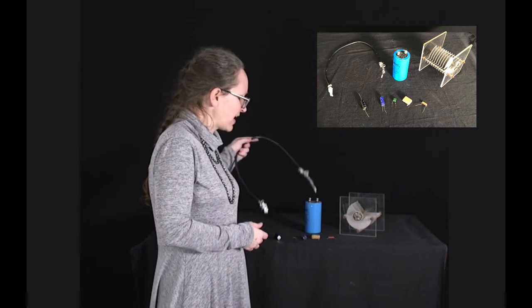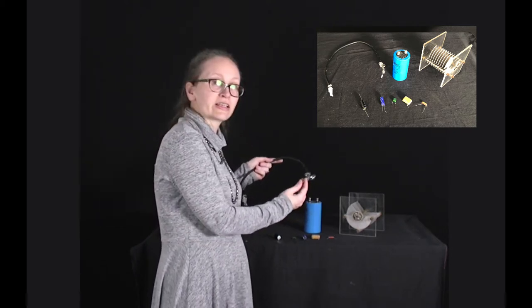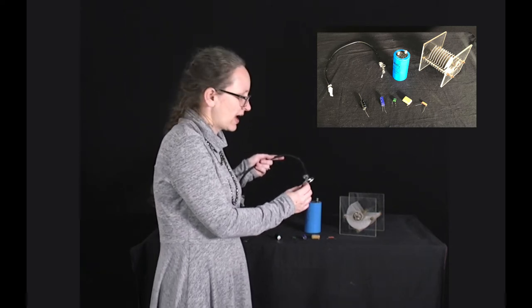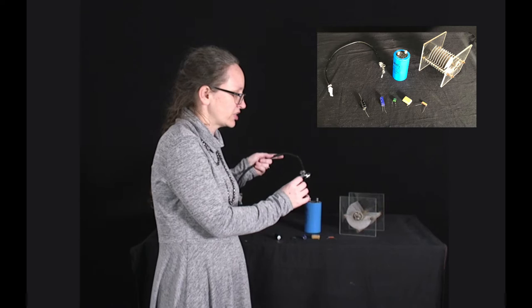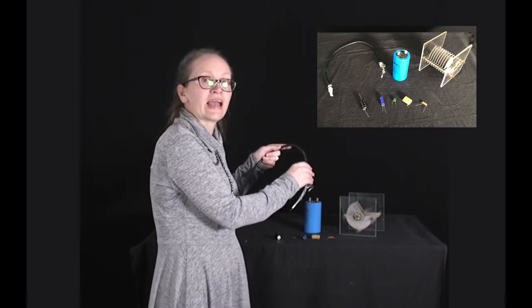So here I have several different examples of capacitors. This one is a coaxial cable. In the middle it's got a conducting wire, around that it's got some insulating material, and then it's surrounded by a conducting sheath, and then usually there's some more insulating material on the outside.